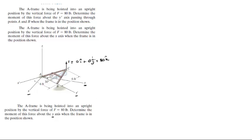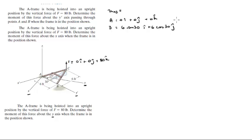The first thing we need to find is a unit vector in the y-prime axis direction, that will be unit vector AB. For that we need points A and B. A sits at the origin: 0i plus 0j plus 0k. And B sits at 6 sin(30) in the i plus 6 cos(30) in the j plus 0 in the k, which comes out to be 3i plus 5.2j plus 0k.